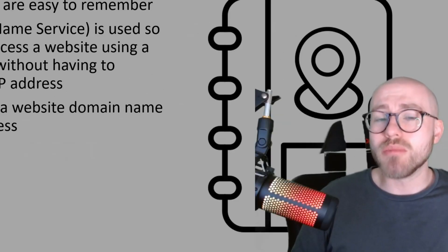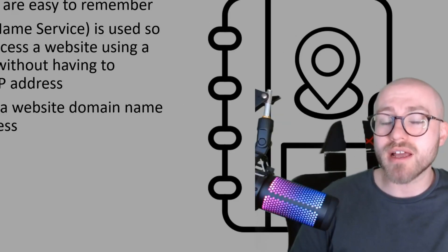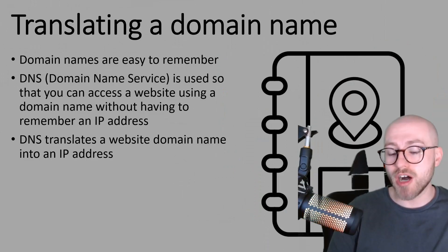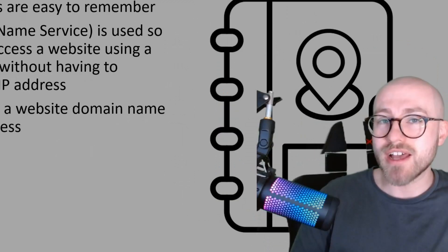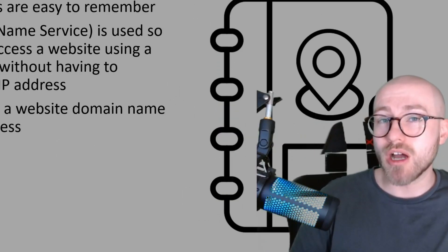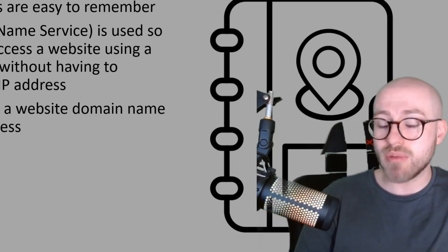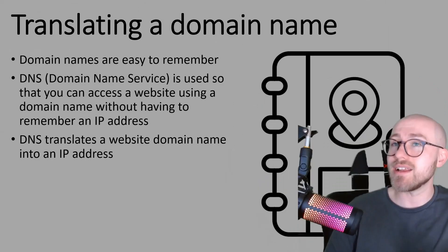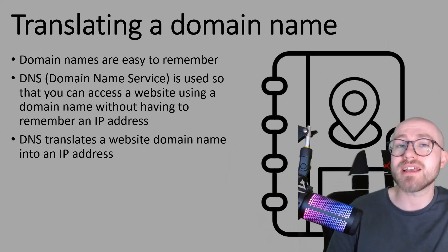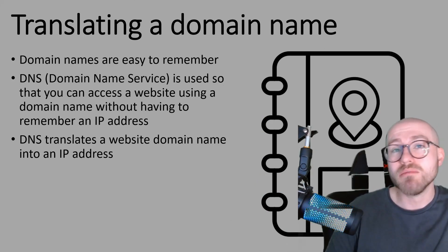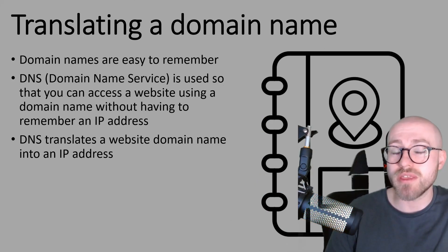You can think of it a bit like a phone book. You might not remember your friend's mobile number, but you remember their name. So let's say you've got a friend called Bob — you can click on Bob and it will call Bob. However, you probably don't remember Bob's number off the top of your head. All you need to remember is the name Bob, you click on it, it dials it, and it works in the exact same way with DNS because you can remember the name of the website but not the number associated with it.